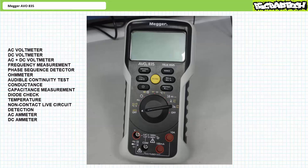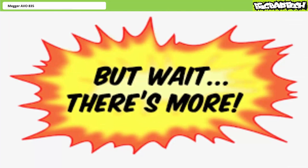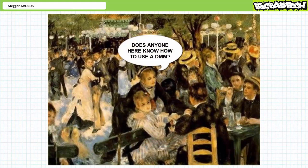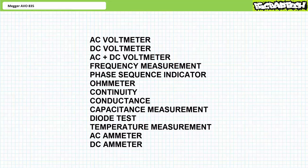Over the course of the last several lectures, we've taken a look at most, but not all, of the Megger AVO 835 functions. Our intention today is to take a look at the remaining special features that have thus far escaped our attention. Not everybody knows how to use a multimeter — most don't. If you've been following these lectures in their intended sequence, consider yourself among the few and proud that do. Ohmmeter, voltmeter, ammeter, phase sequence indicator, diode test, capacitance, and temperature measurement — these common features are routinely employed in industrial environments, and only those trained in their use get the job.